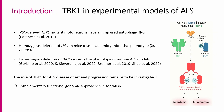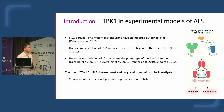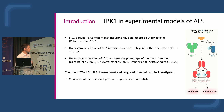TBK1 has been studied in different experimental models of ALS. In iPSC-derived motor neurons from ALS patients with TBK1 mutations, cells showed impaired autophagic flux. Homozygous deletion of TBK1 in mice causes an embryonic lethal phenotype with increased cell death in the liver at embryonic day 13. Heterozygous deletions do not lead to a phenotype by themselves but worsen the phenotype of ALS models like SOD1 G93A mice.